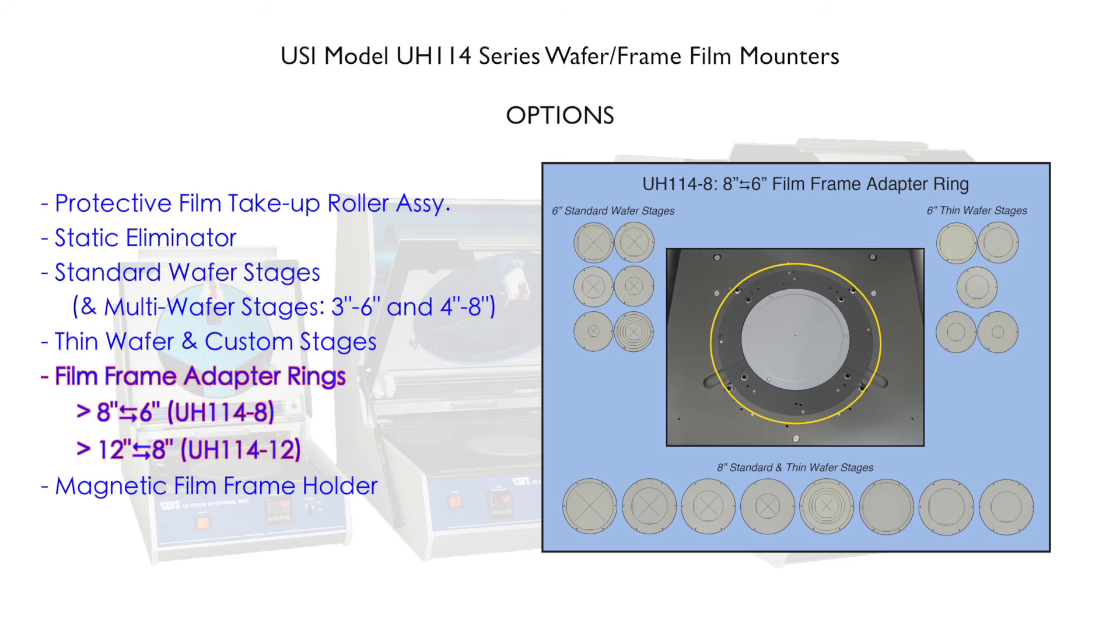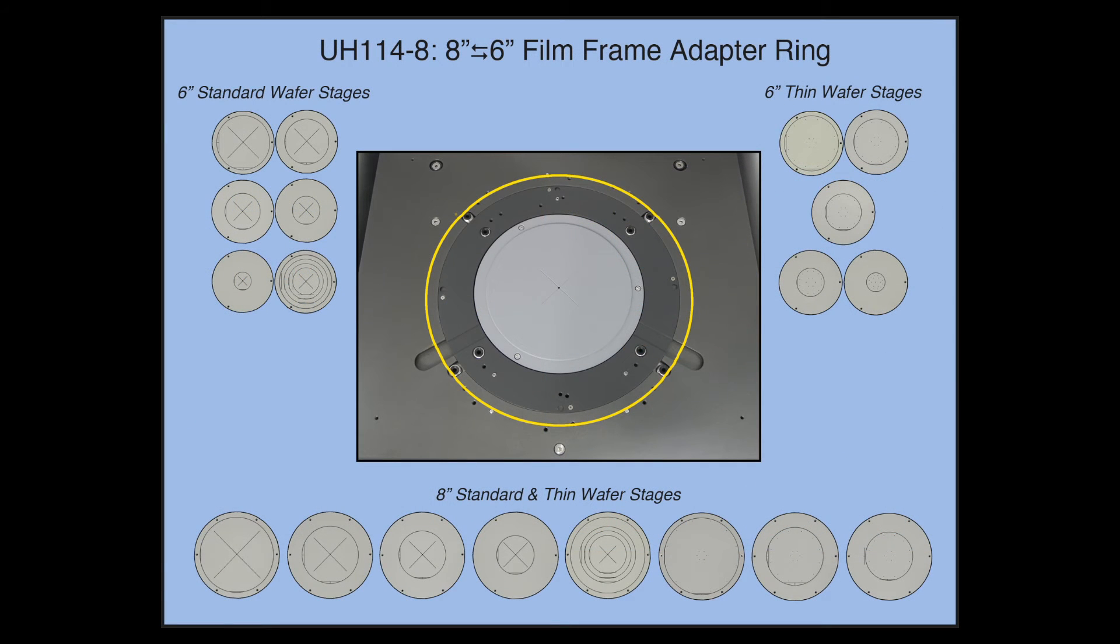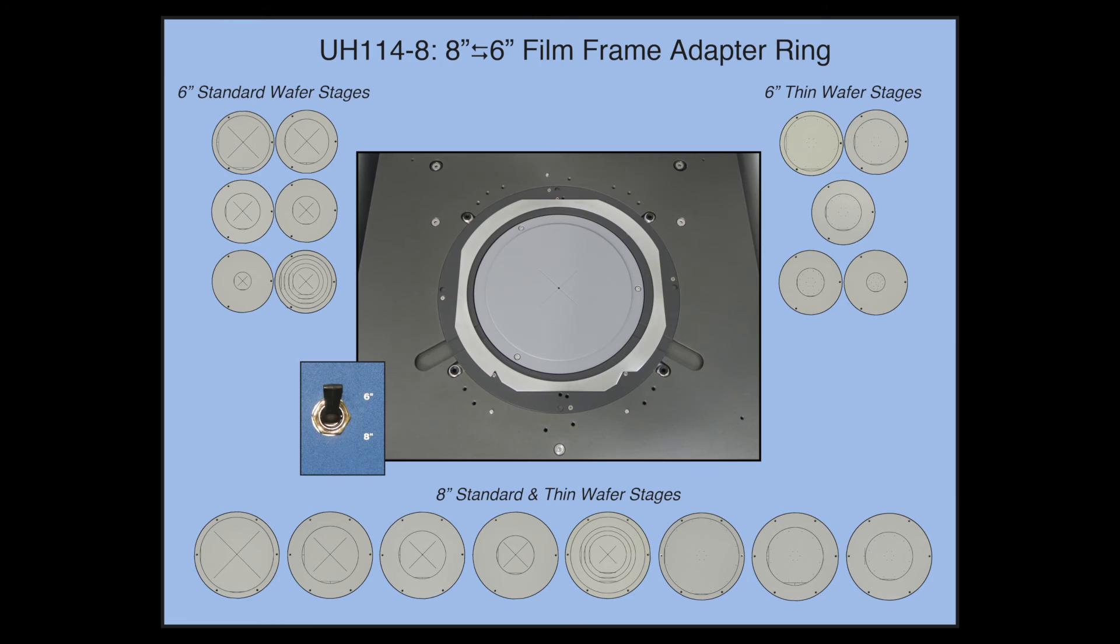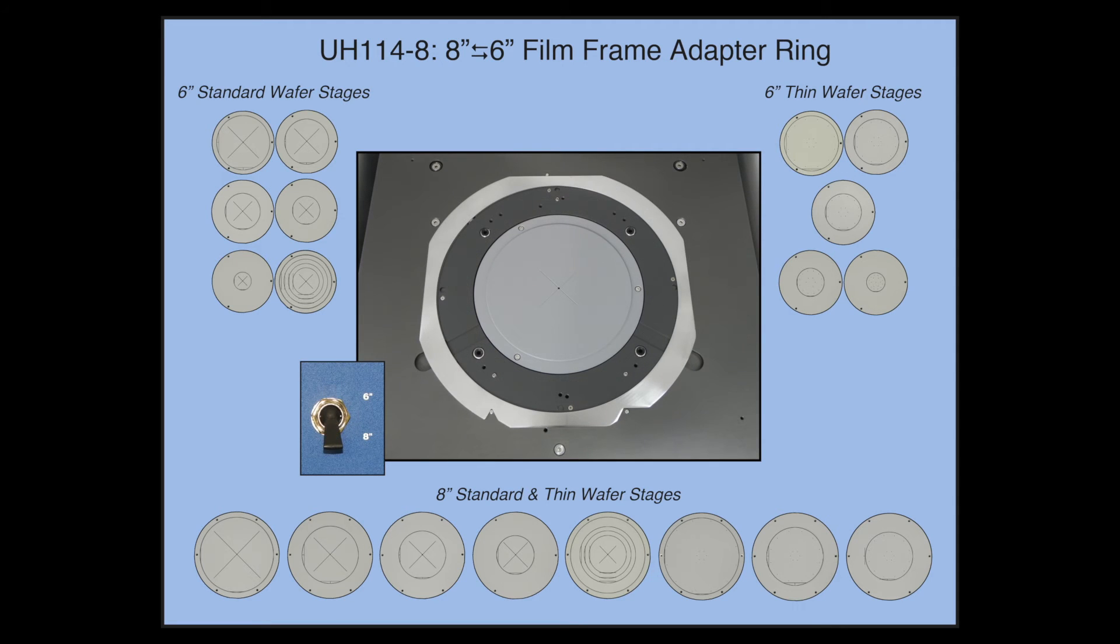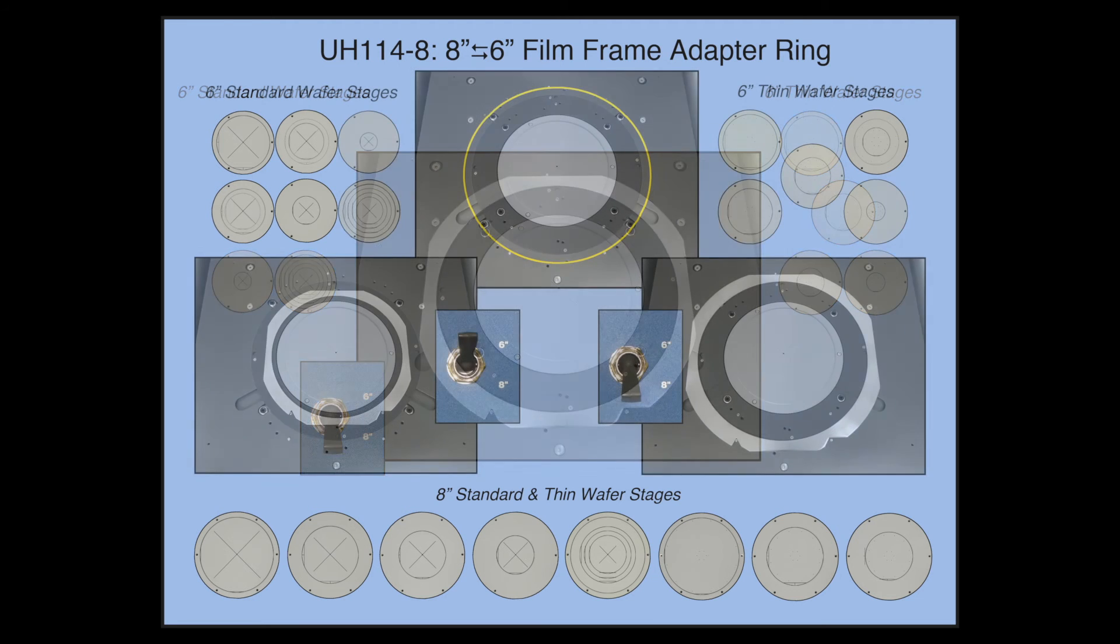Film frame adapter rings. The film frame adapter ring allows the flexibility to use two different sized film frames on a single 8-inch or 12-inch machine. This is used not only for varying subsequent expansion after wafer mounting,